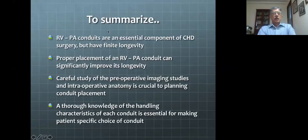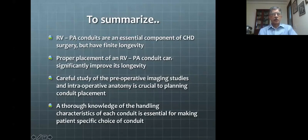To summarize: right ventricle to pulmonary artery conduits are an essential component of congenital heart surgery but have finite longevity. Proper placement of the conduit is very important, with attention to the finer points mentioned. Careful study of preoperative imaging and intraoperative anatomy is crucial to planning conduit placement, and thorough knowledge of the handling characteristics of each conduit is essential for making a patient-specific choice.